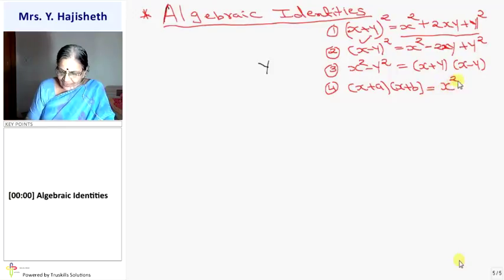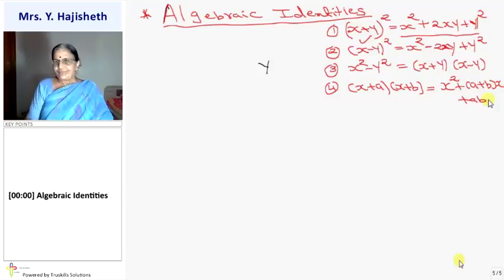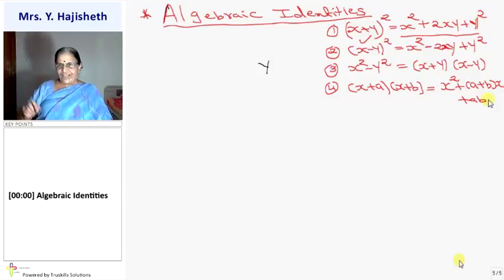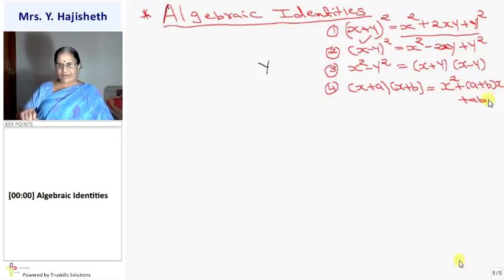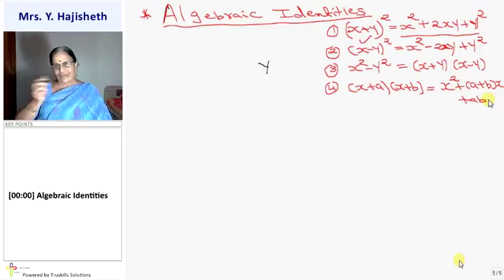For the fourth formula: x squared plus ax plus bx should be written together as x squared plus (a plus b)x plus a times b. It is based on splitting — find factors of ab such that their sum equals the middle term. So a times b is ab and a plus b is the middle term. You split it, open it, make a pair, and get the two factors.